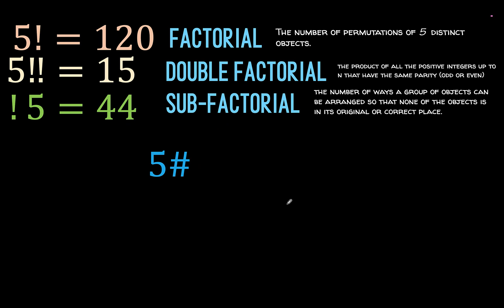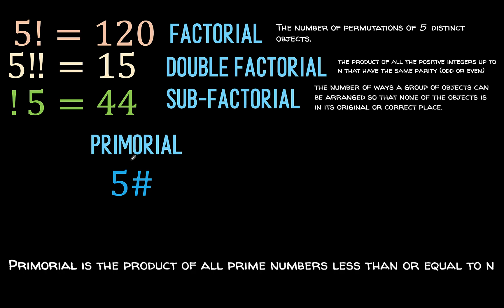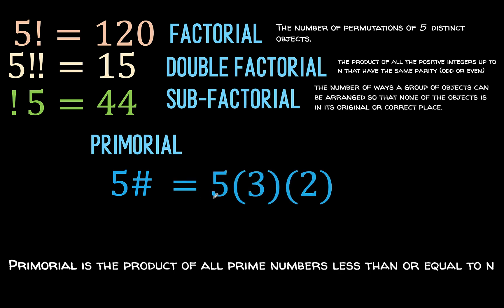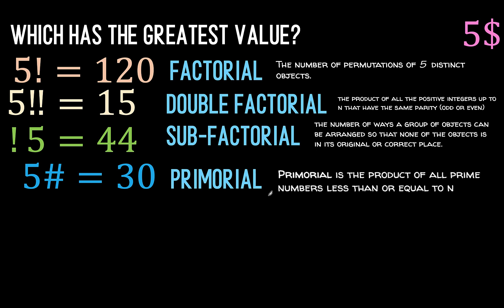The next one is 5 primorial, written as 5 followed by a pound sign. Primorial comes from the root word prime. The primorial of a number is the product of all prime numbers that are not greater than n. For 5, the primes are 5, 3, and 2 — since 4 is composite and 1 is neither prime nor composite. Multiplying these gives 30 for 5 primorial. This has some applications in number theory.